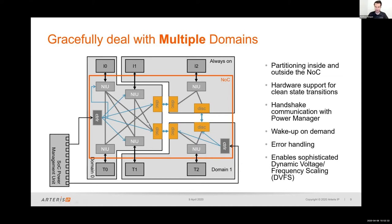This is the role of the disconnect unit. If one of the agents is trying to send a packet to a target in a domain that is powered off, the packet will be held at the disconnect unit, which notifies the PMU to wake up the domain because transactions are pending. This demand handling support also enables dynamic voltage and frequency scaling — a sophisticated technique used to raise voltage and frequency when more compute is needed, and lower them when less compute is needed, to maximize power savings.